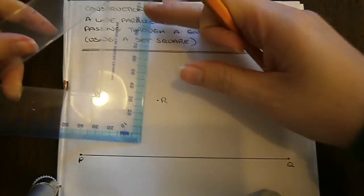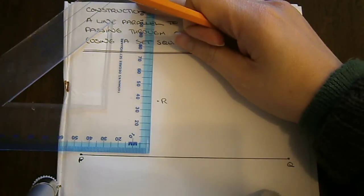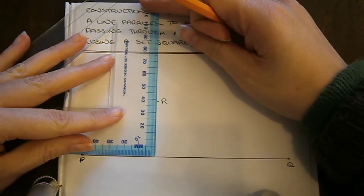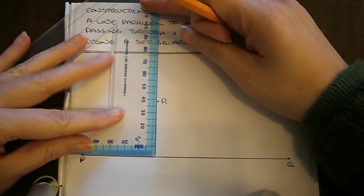We take our set square and we place it on the line PQ. We slide it so that it also goes through point R.